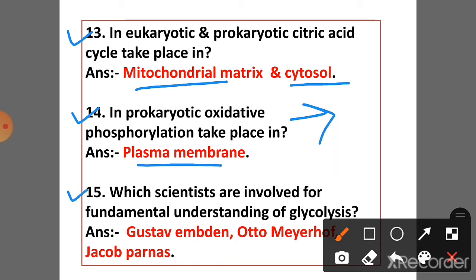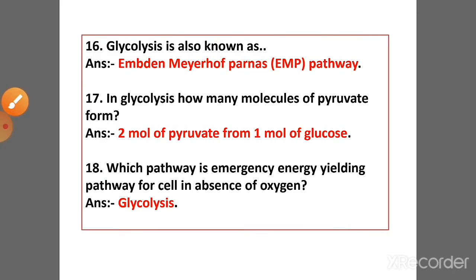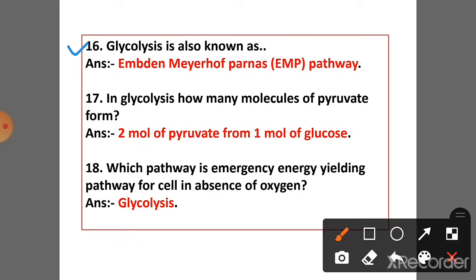Question 15: Which scientists are involved in the fundamental understanding of glycolysis? Question 16: How many molecules of pyruvate are formed? Answer: 2 molecules of pyruvate are formed from 1 molecule of glucose.